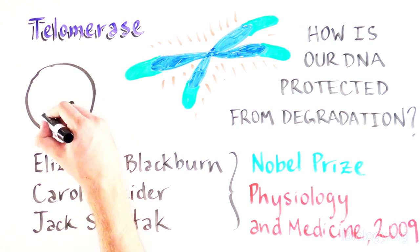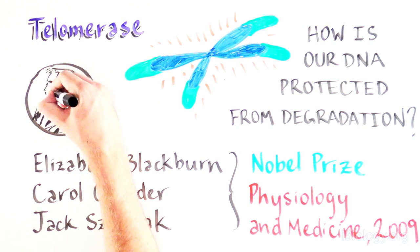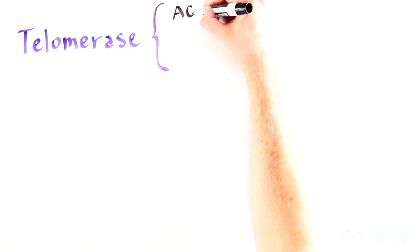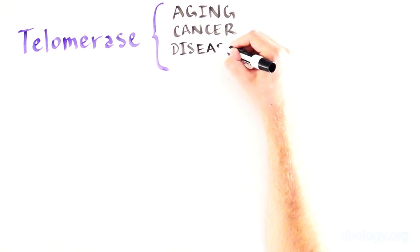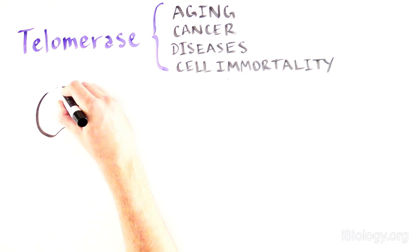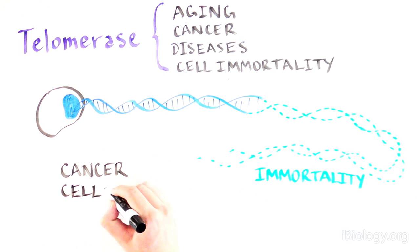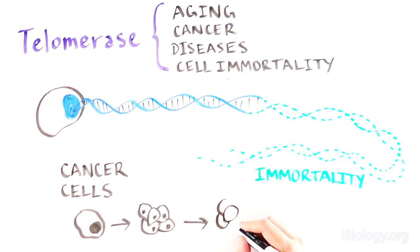Telomerase was discovered by scientists interested in learning more about our own biology. Since the discovery of telomerase, we now know that this enzyme plays many important roles in aging and diseases such as cancer. By extending chromosomes, telomerase can make some cells immortal. And cancer cells use this enzyme to divide essentially indefinitely.